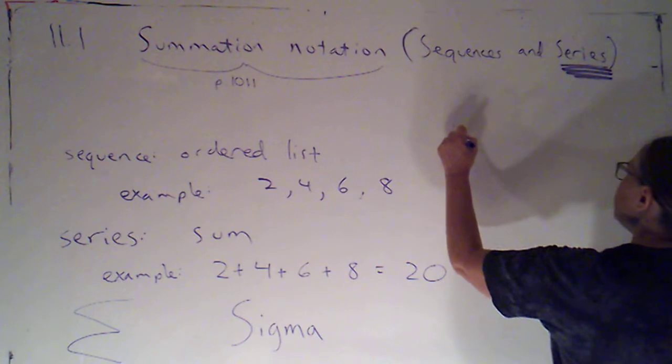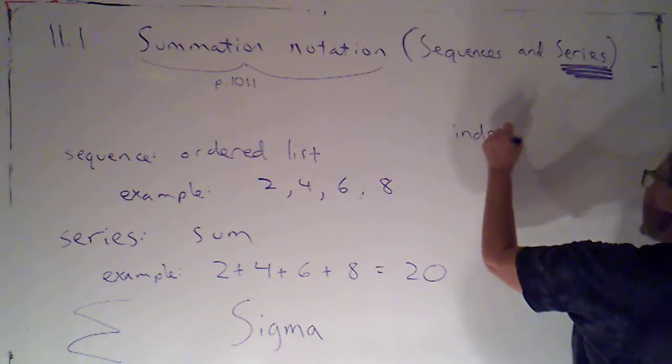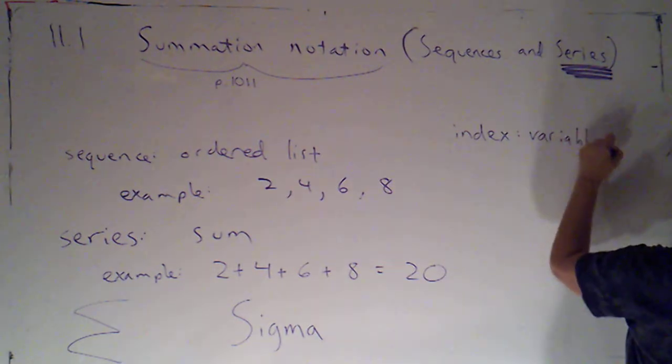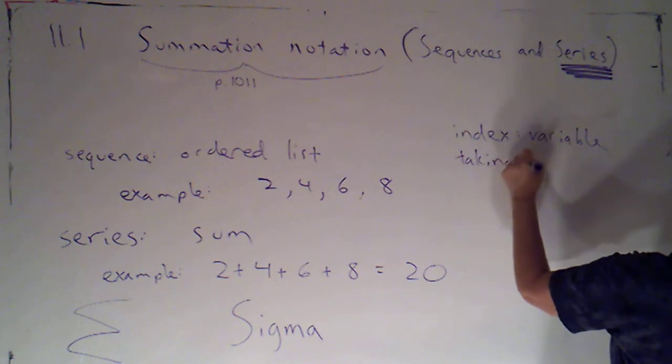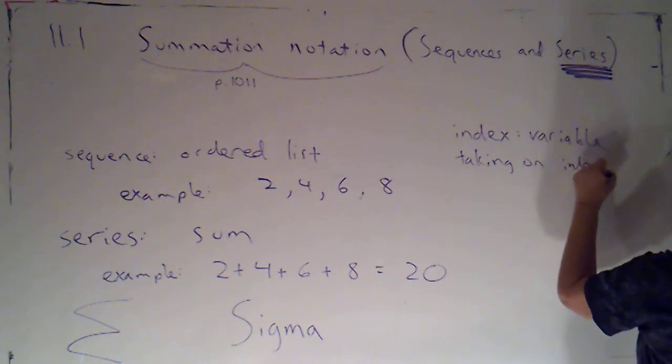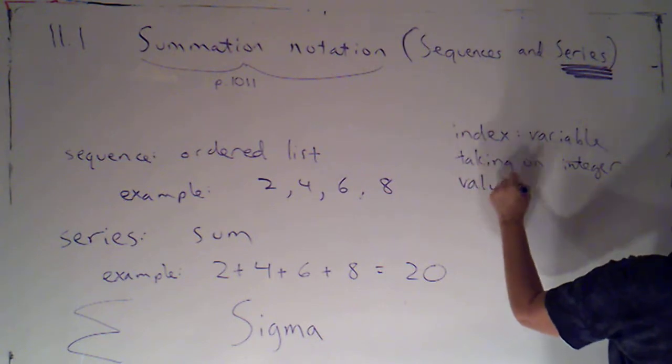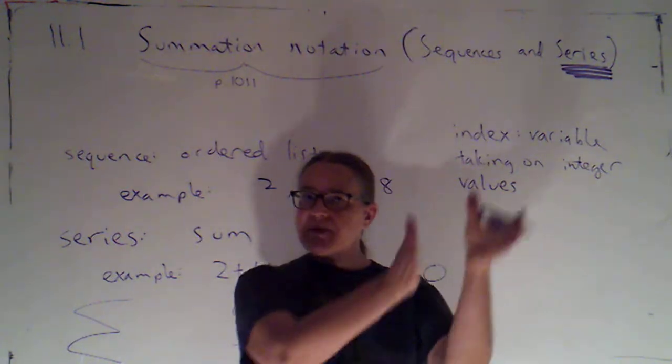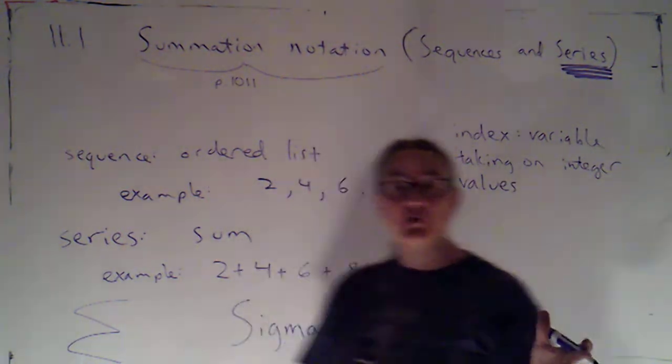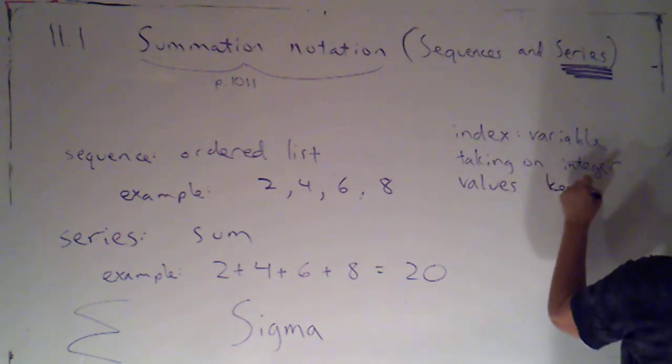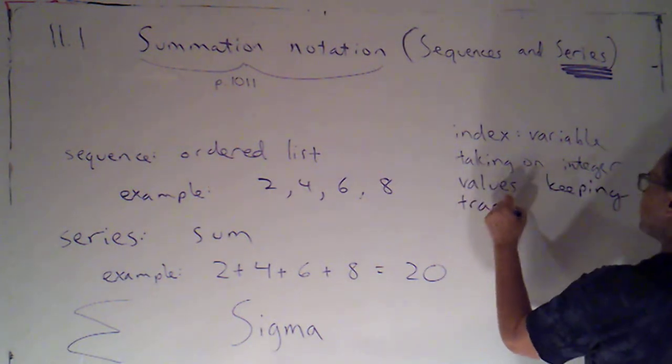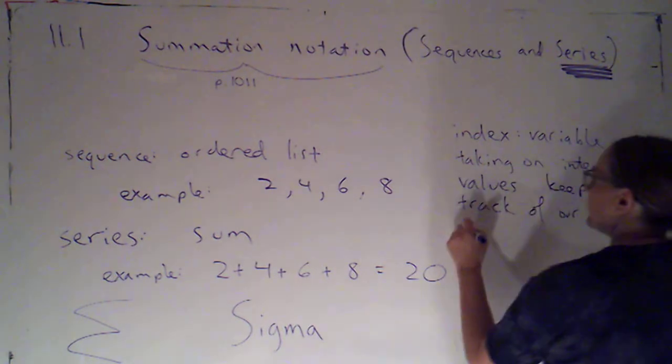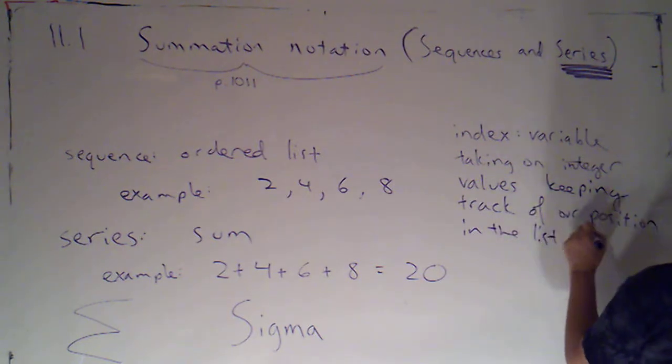In order to do that, we're going to need something called our index. Our index is going to be a variable taking on integer values. And it's going to tell us where we are, what position we're in, in the list of terms that we're adding up. So it's keeping track of our position in the list of terms we are adding.